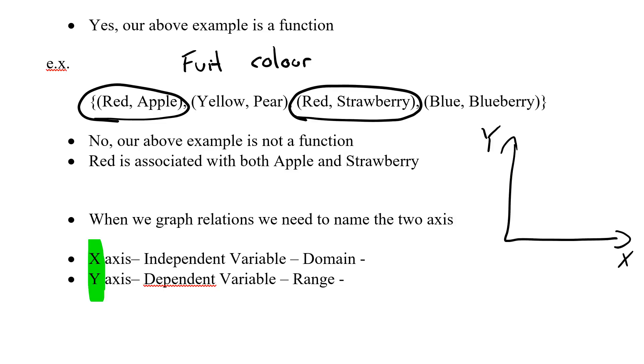We can also call these the dependent and independent variables. My x is my independent variable, my independent axis. And my y is my dependent variable, or my dependent axis. We also can call them the domain and the range. I would list all my domains across the x-axis and I would have all my range go on the y-axis.